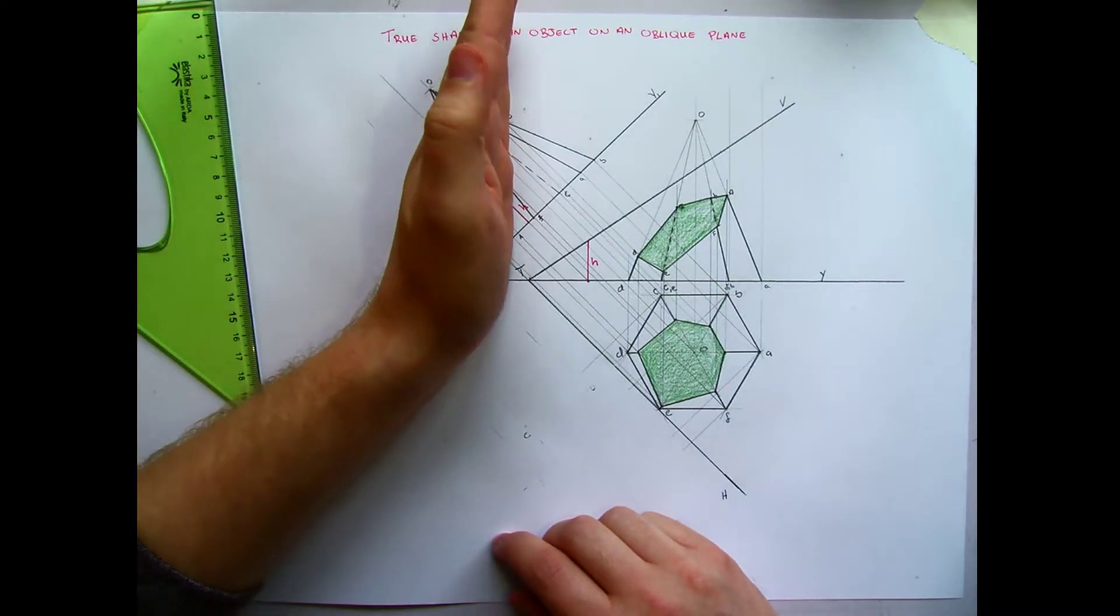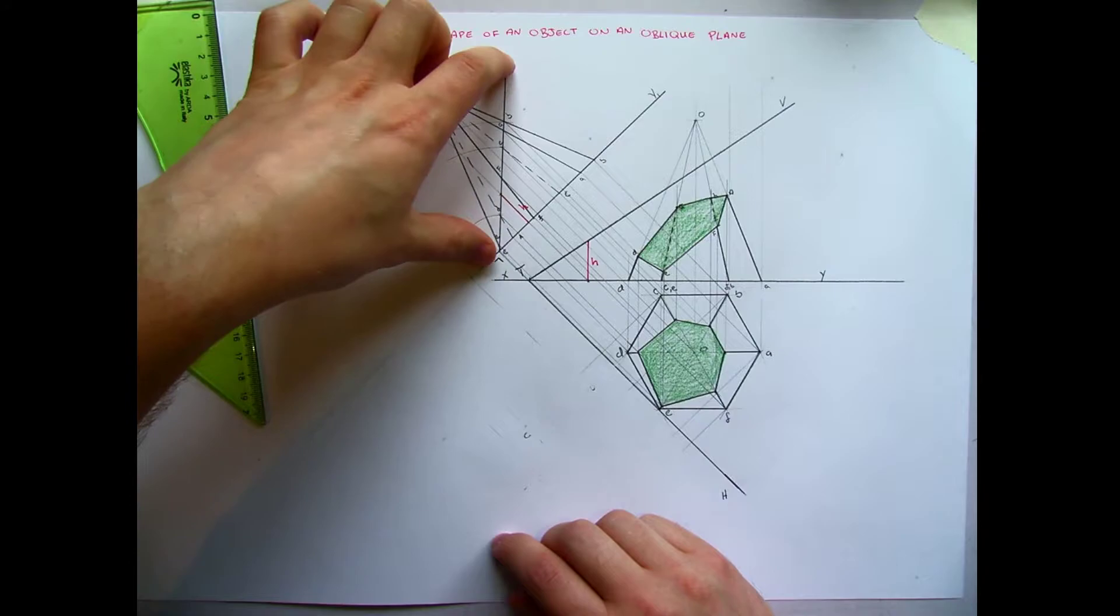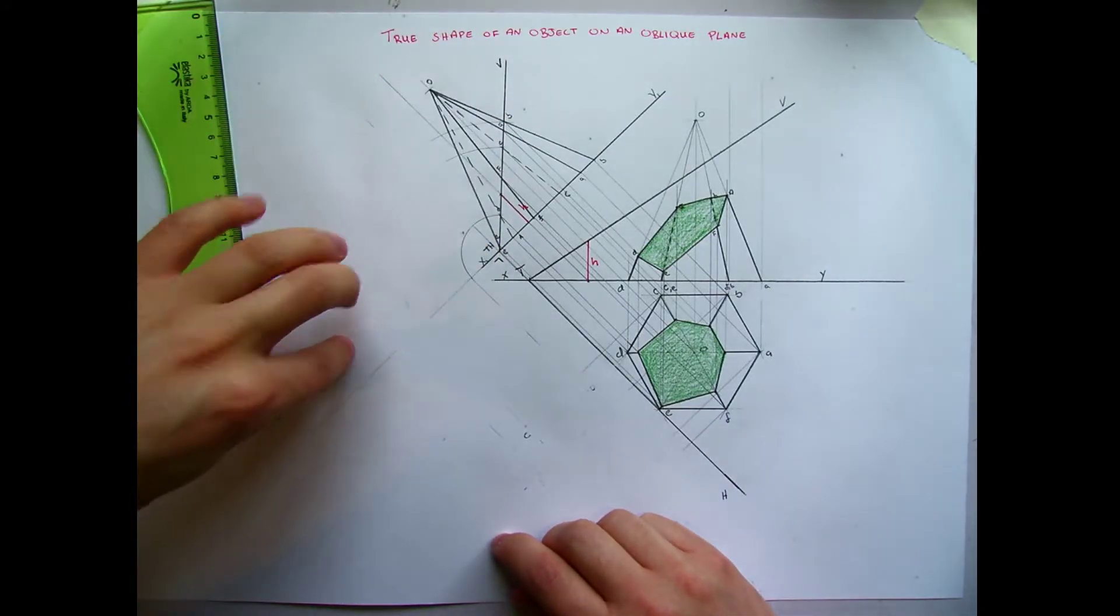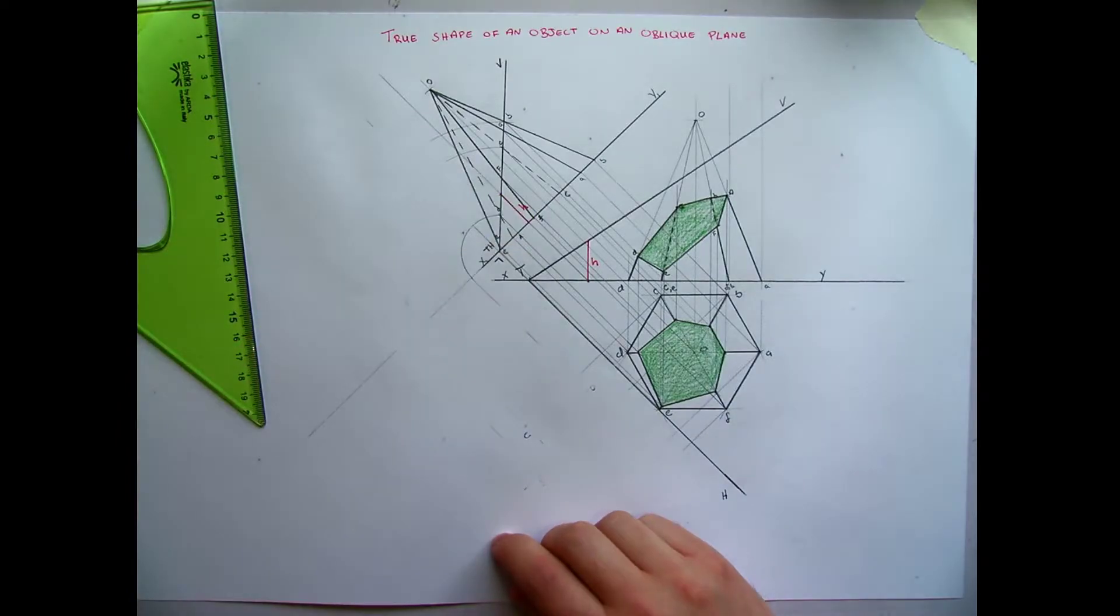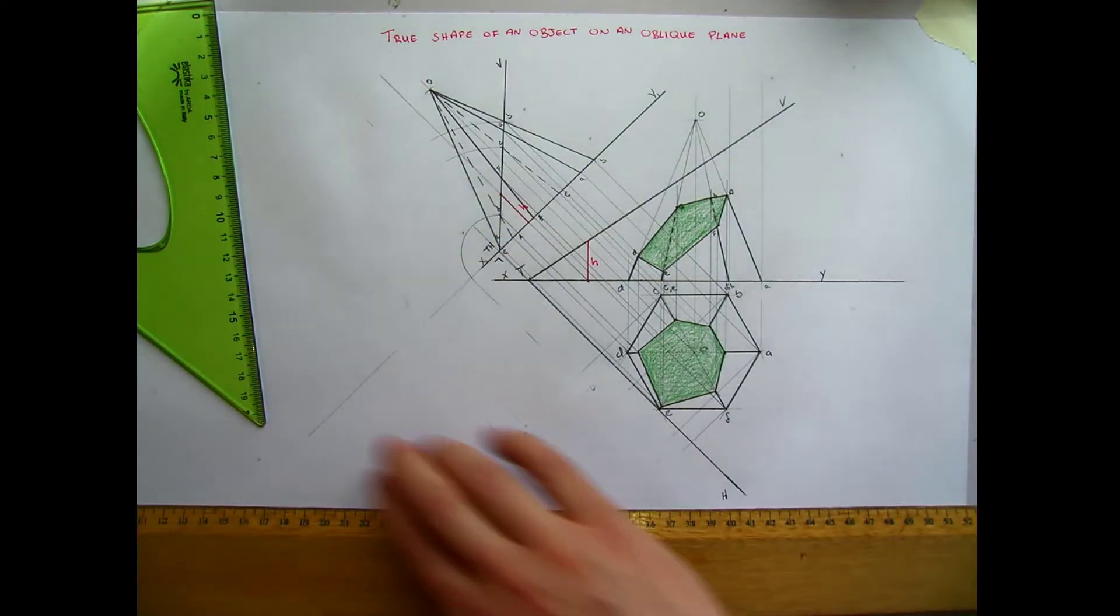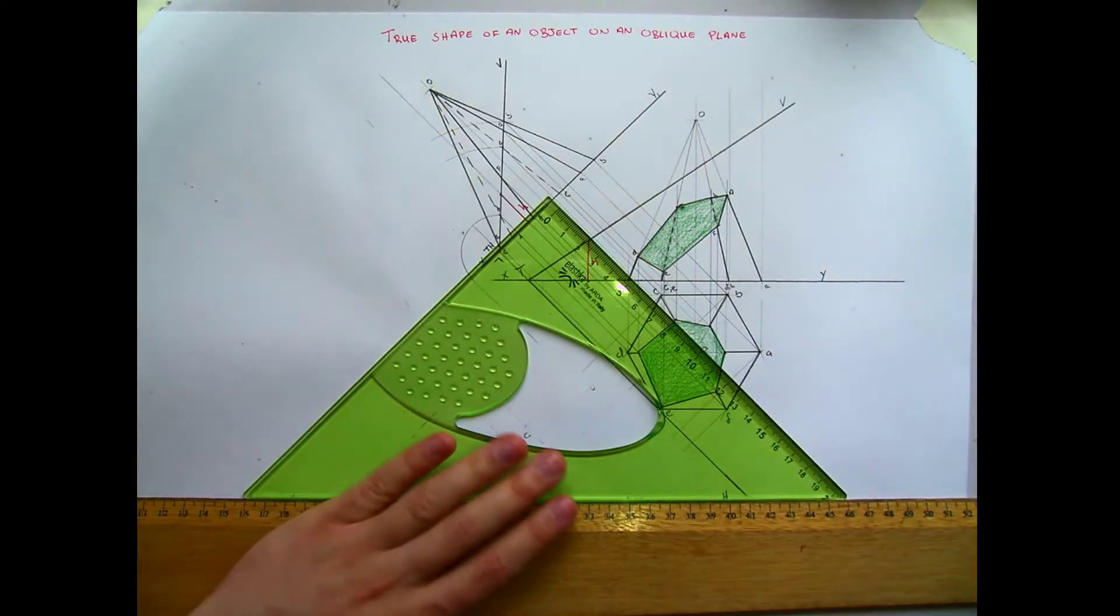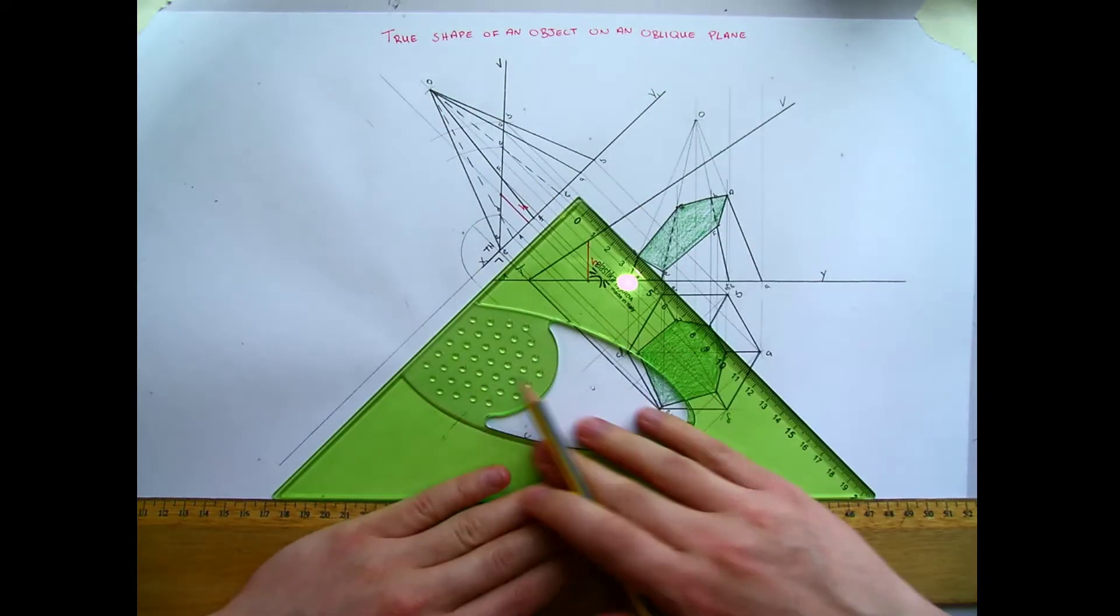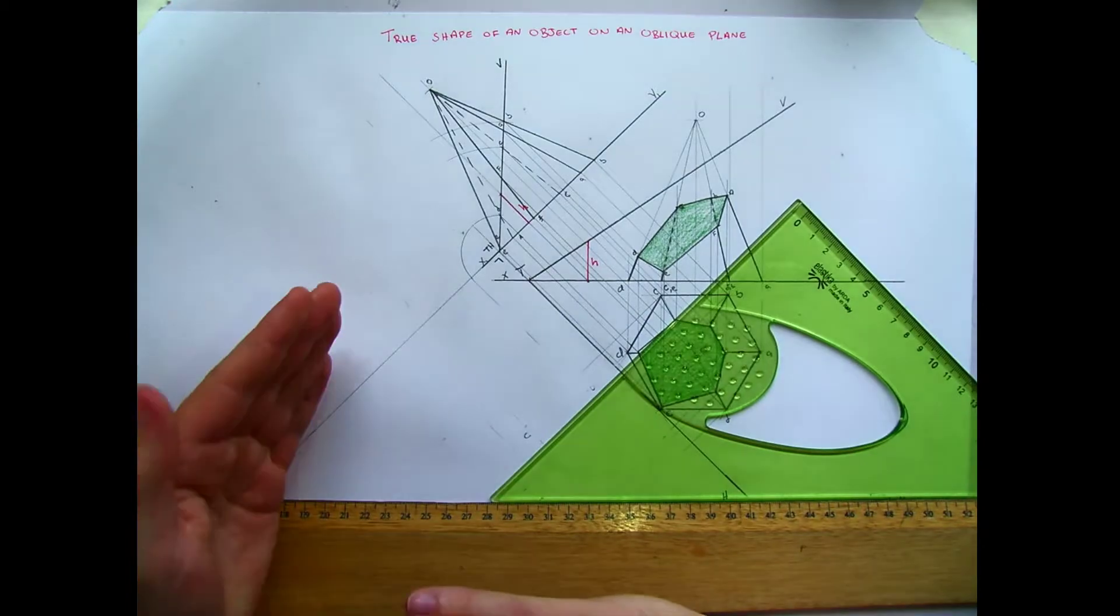This gives me an edge view of that solid, which means I can now rotate each of those points around on the vertical trace until they're lying flat on the ground. Now when something is going to be lying flat on the ground here, it is going to be on the x1, y1 line. As that is an edge view of our horizontal plane.